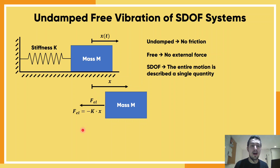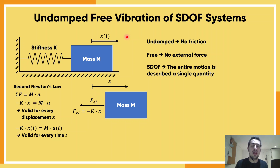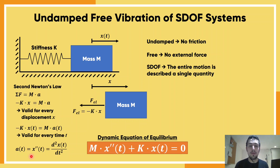So if this is the only force we have, and according to Newton's second law the sum of forces equals ma, we can write: minus kx equals ma. This is valid for every displacement x. Since we're trying to find the equation of motion x(t), this equation of equilibrium is valid for every time t. We also know that acceleration is the second derivative of position. So we can replace acceleration accordingly and arrive at the famous dynamic equation of equilibrium: mass times the second derivative of displacement, plus stiffness times position, equals zero at every time t.